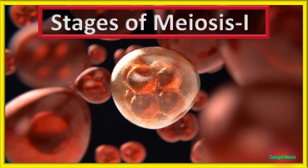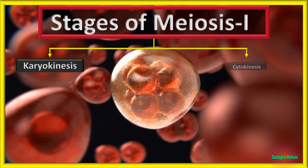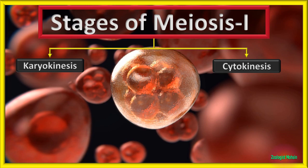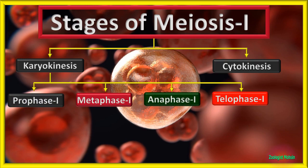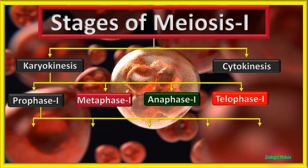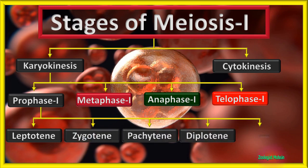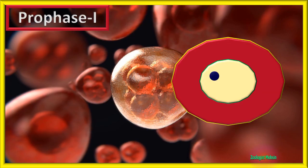Now let's have a look at the stages of meiosis 1 briefly. Meiosis 1 is divided into two stages: karyokinesis and cytokinesis. Karyokinesis is the division of the nucleus while cytokinesis is the division of the cytoplasm. Karyokinesis is further divided into four phases: prophase 1, metaphase 1, anaphase 1, and telophase 1. Prophase 1 is further subdivided into five smaller stages: leptotene, zygotene, pachytene, diplotene, and diakinesis.